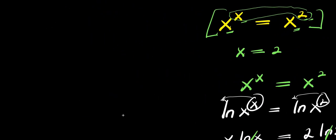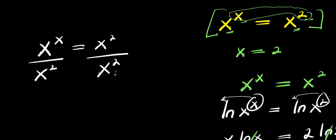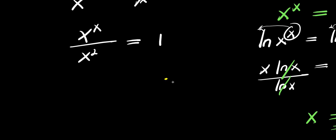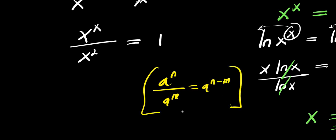Let's recopy the problem again: x^x = x^2. We divide each part of this equation by x^2. Applying the exponent identity a^n / a^m = a^(n-m), the left side becomes x^(x-2), and the right side becomes 1. So we have x^(x−2) = 1.